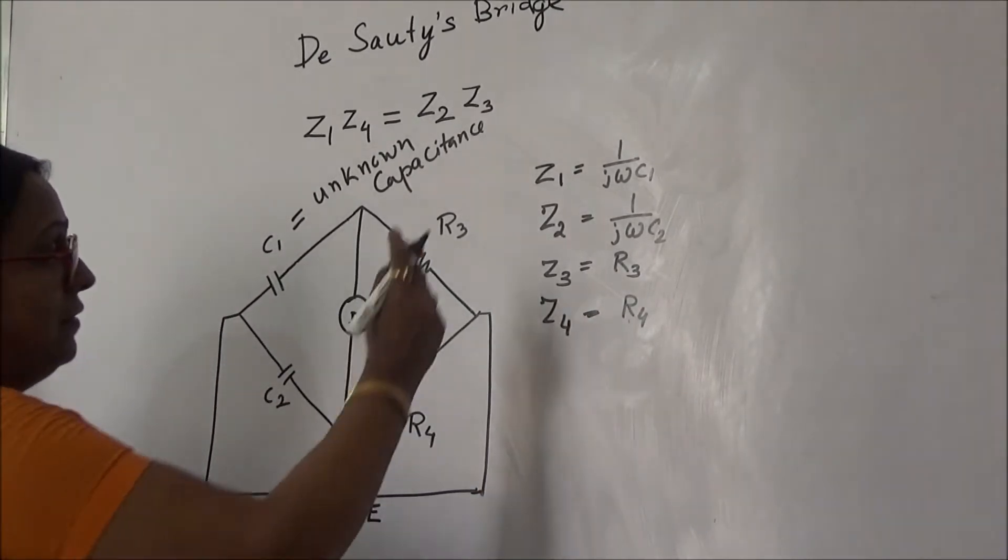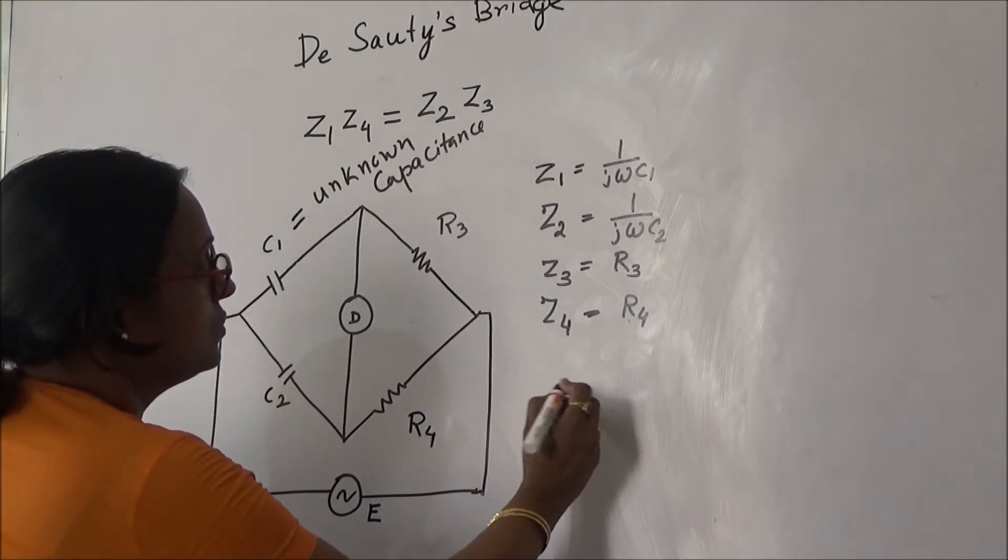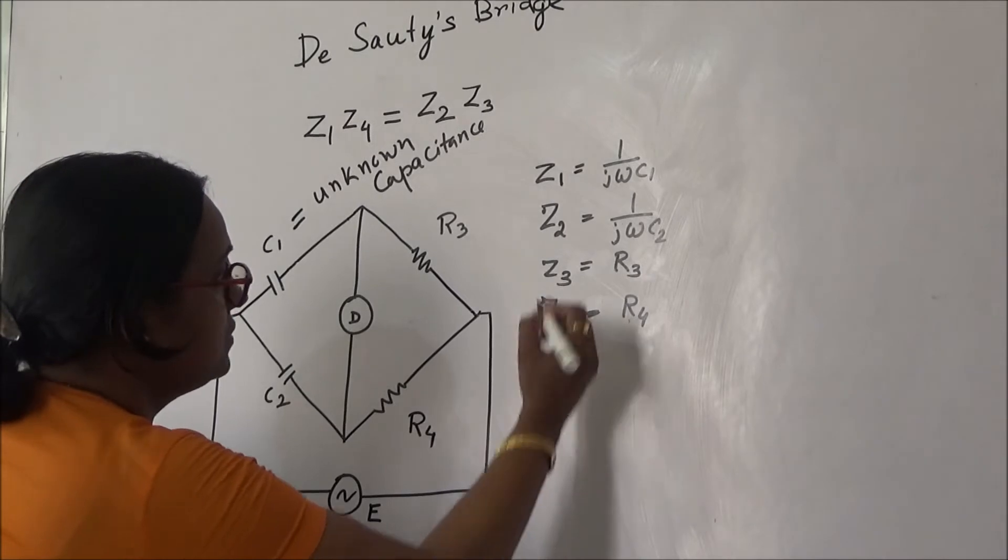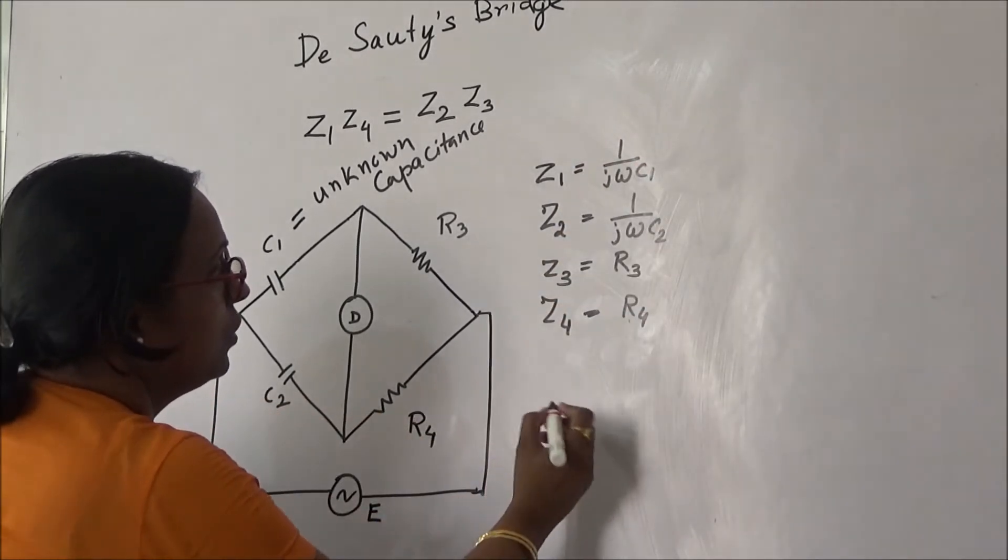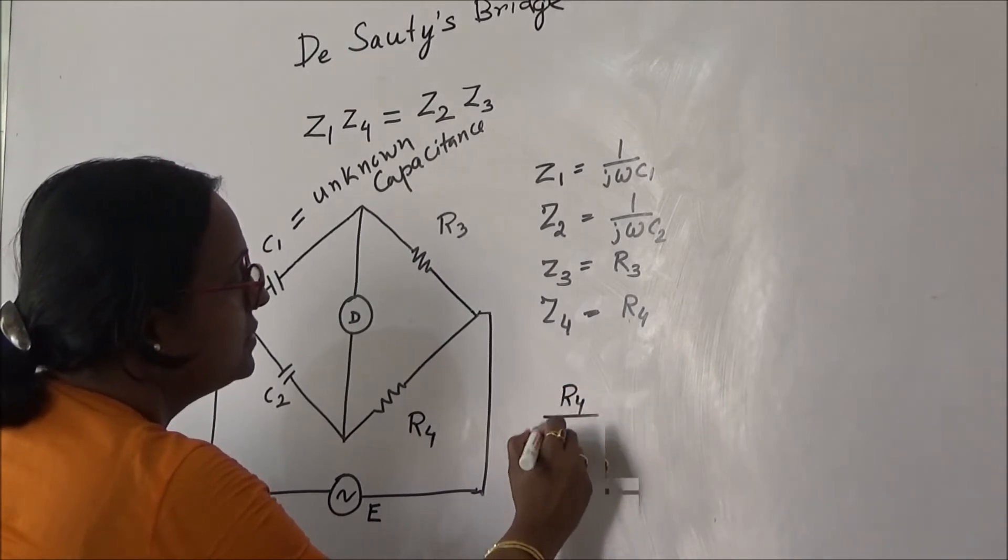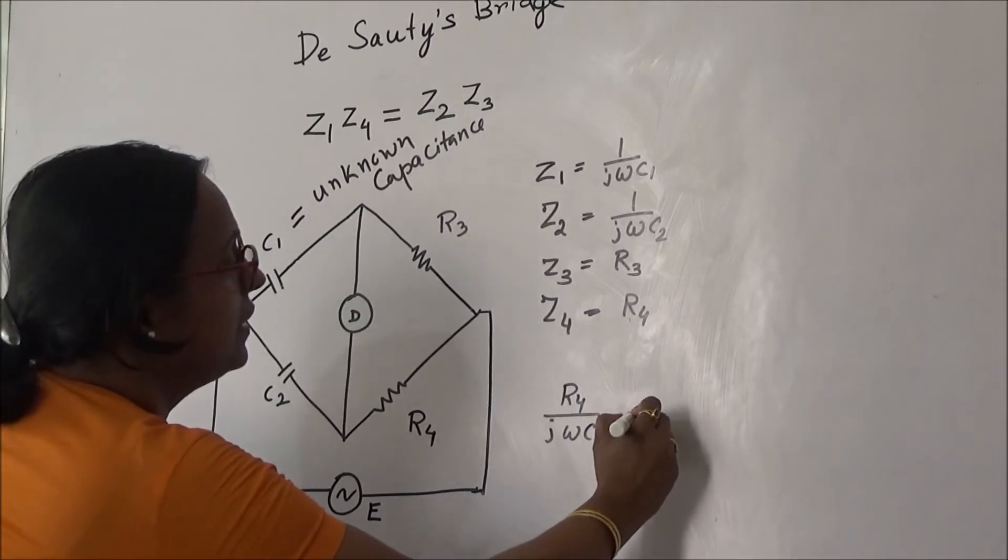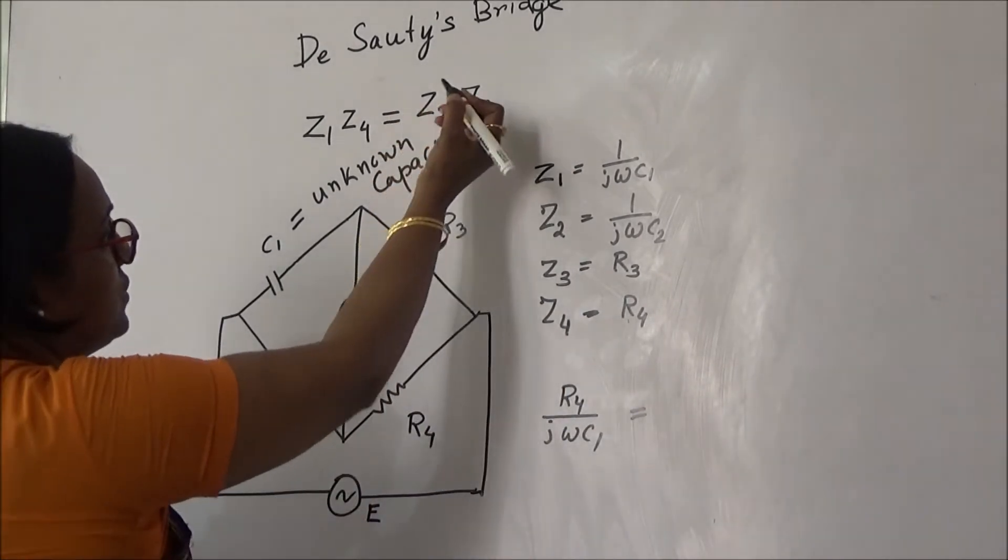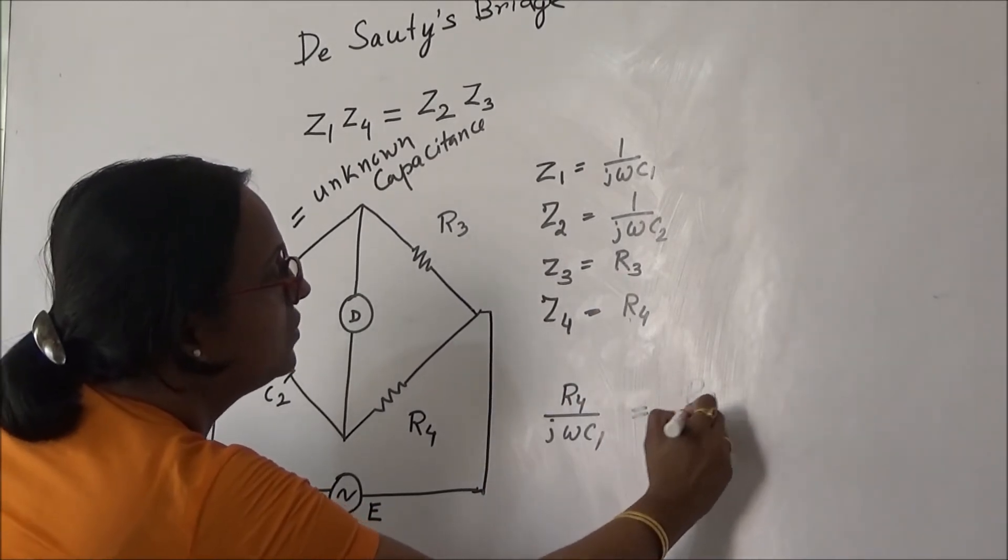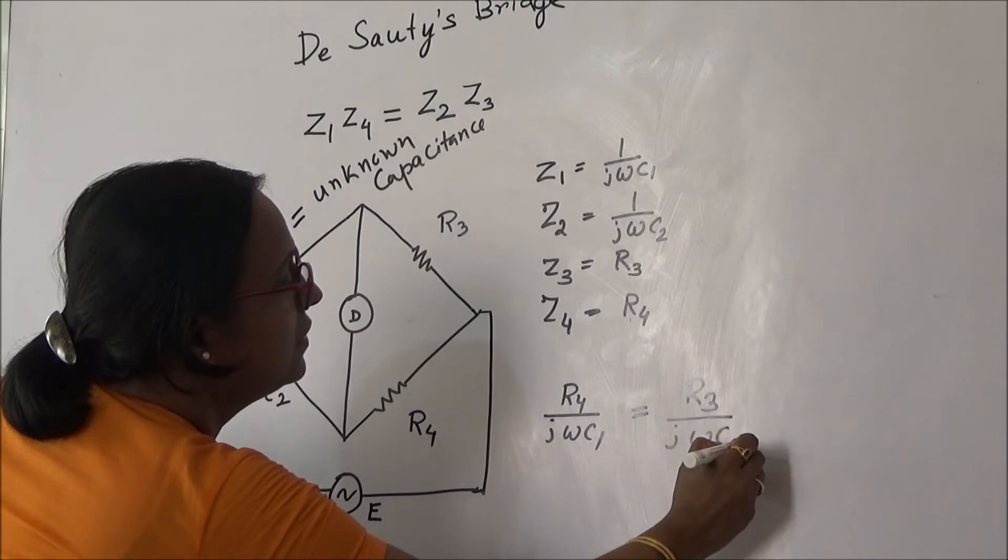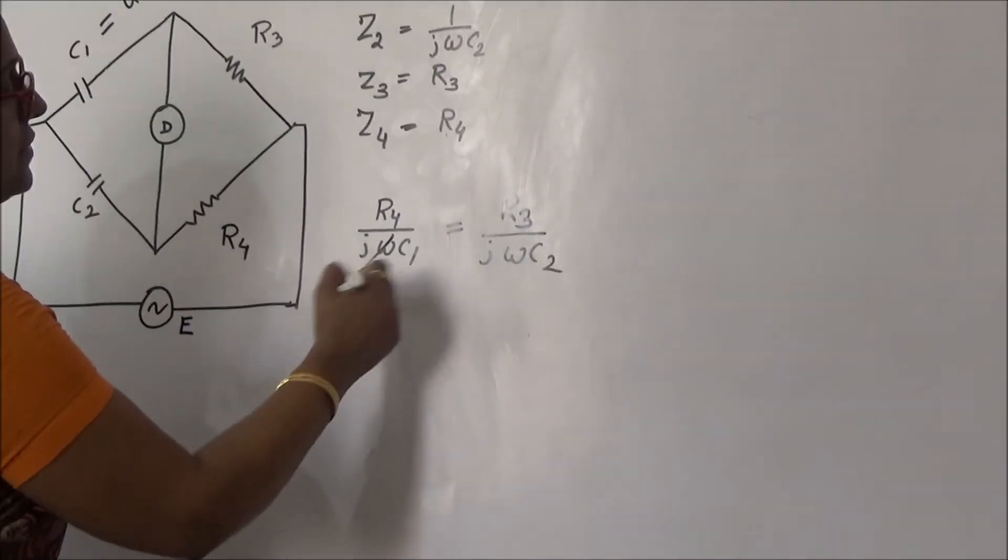So Z1·Z4 means (1/jωC1)·R4. So R4/(jωC1) is equal to Z2·Z3. Z2·Z3 means R3/(jωC2). So jω cancels.